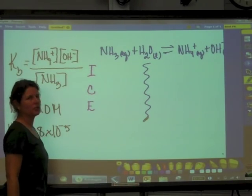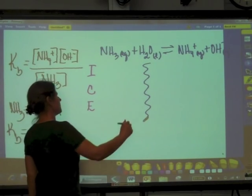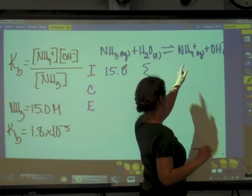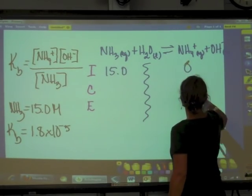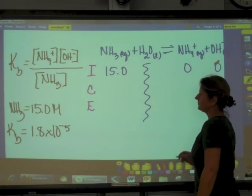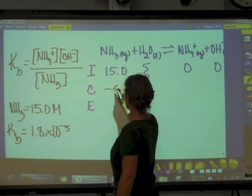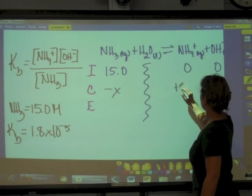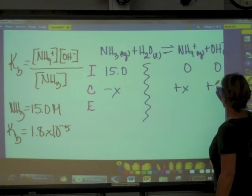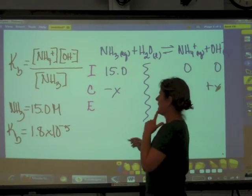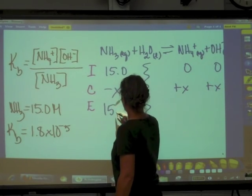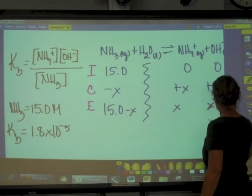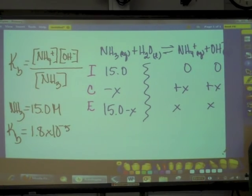What is my initial concentration of ammonia? 15. Initially I have nothing, I have nothing. I'm going to lose X. These are in a 1 to 1 so I'm going to gain X, I'm going to gain X.